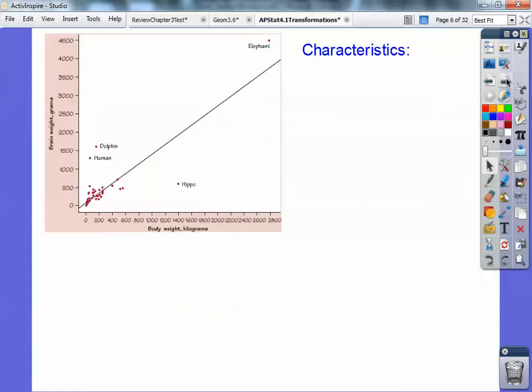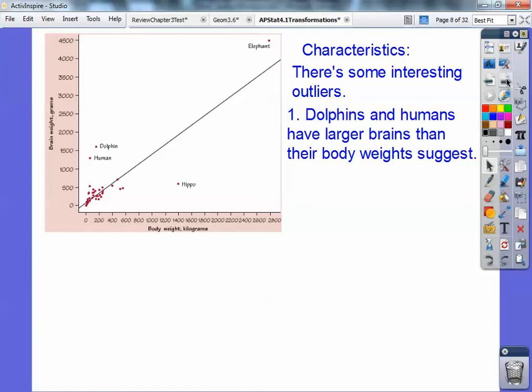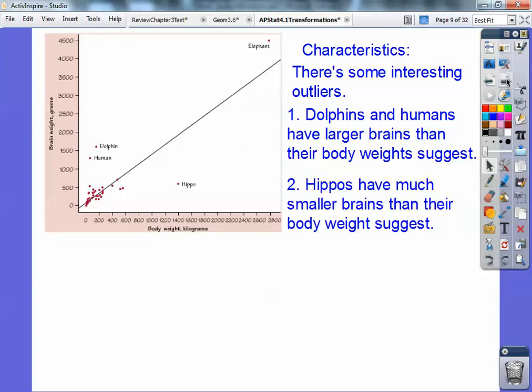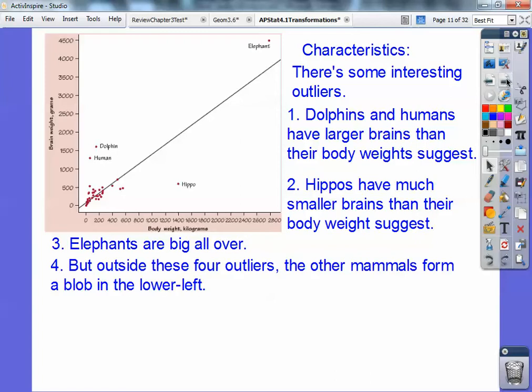Here are some characteristics you guys. There are some interesting outliers happening. The dolphins and humans seem to have much larger brains than their body weights suggest. The hippos have much smaller brains than their body weight suggests - they're the dummies. The elephants are just big all over, big weight and big brain weight too. Outside these four outliers, the other mammals form a big old blob over here in the lower left-hand corner.